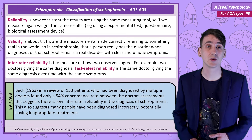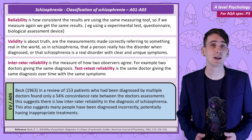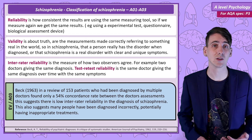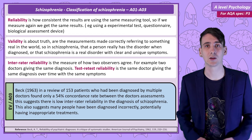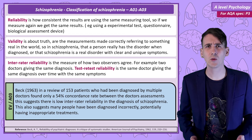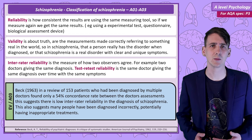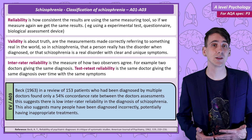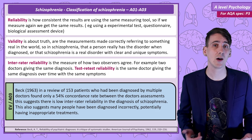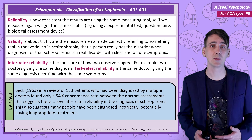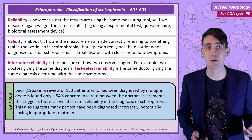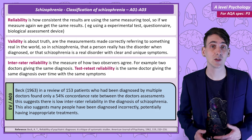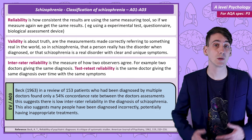Evaluating the reliability of schizophrenia diagnosis: Beck in 1963 reviewed the diagnosis of 153 patients who had been diagnosed by multiple doctors. The results showed only a 54% concordance rate between the doctors' diagnoses. This means that the inter-rater reliability of schizophrenia diagnosis is low, and suggests many people might be being misdiagnosed and potentially receiving inappropriate treatment — or worse, not being diagnosed and missing out on treatment they really need.